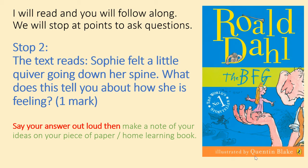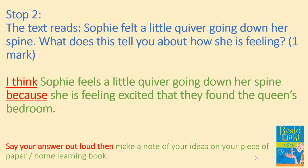We're going to stop there. The question is: the text reads 'Sophie felt a little quiver going down her spine' — what does this tell you about how she is feeling? It's a one mark question. Press pause and make a note of your ideas. The answer: I think Sophie feels a little quiver going down her spine because she is feeling excited that they have found the Queen's bedroom.